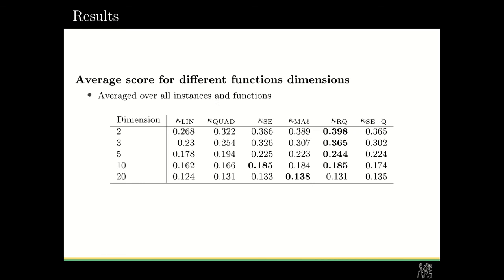Here I have a table for different dimensions of a function. So it's again averaged over all instances and functions. And again here we see that for lower dimensions the best kernel was the rational quadratic, and for the higher dimension of 20 the best kernel was the Matern kernel.